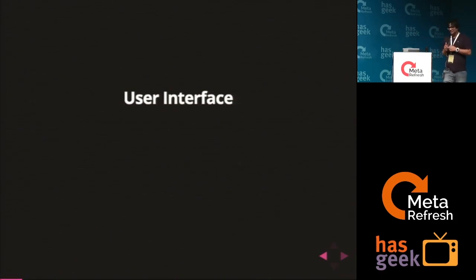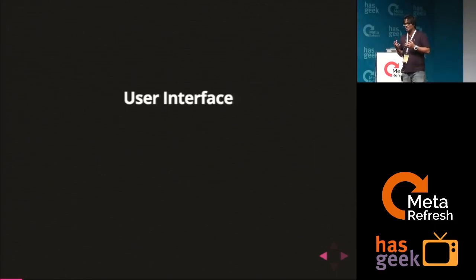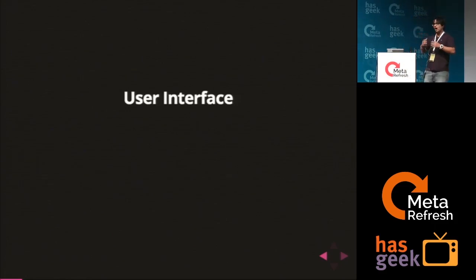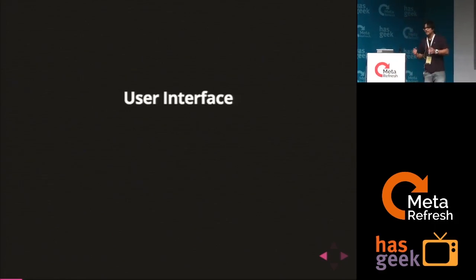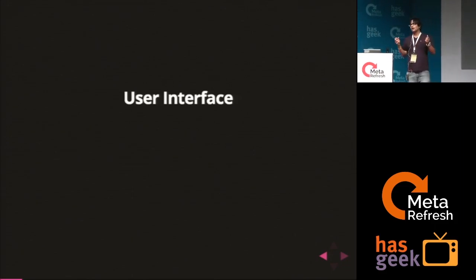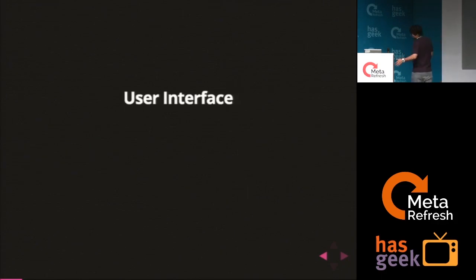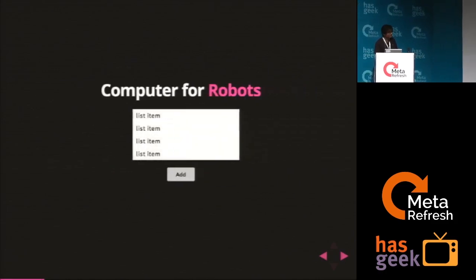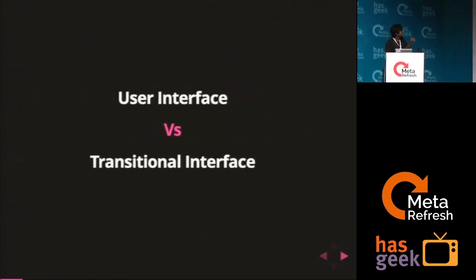When I'm designing a particular website, I go static — I design a particular state A of a page, I design a state B of a page, but something which is missing is how do I change that state A to state B? It just happens. I call it bazinga, it just happens. The state just changes up. This is where I introduce the idea — it's called a transitional interface.